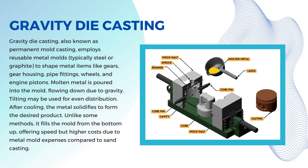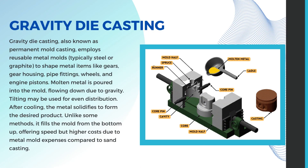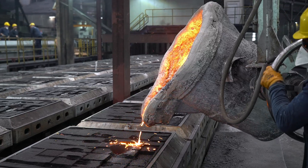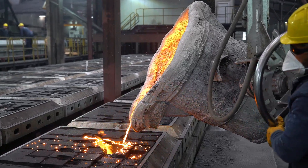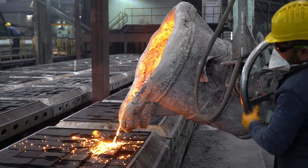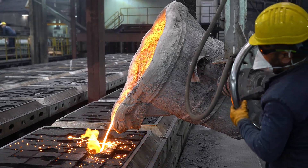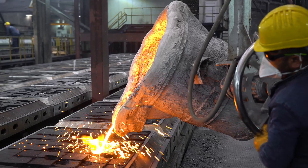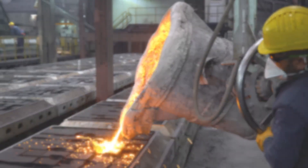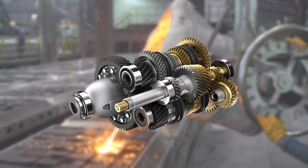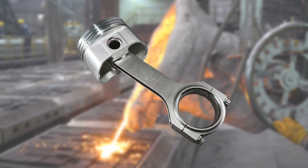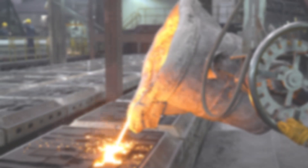Gravity die casting, which is also called permanent mold casting, uses molds made of metal like steel or graphite, which you can use again and again to shape metal and metal mixtures. It is used for making different things like gears, gear housing, pipe fittings, wheels, and engine pistons.